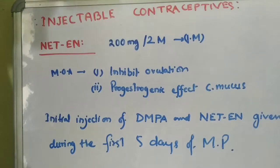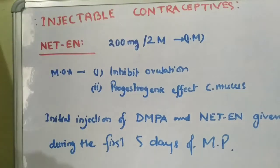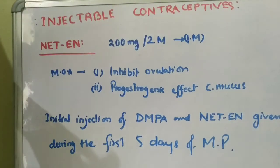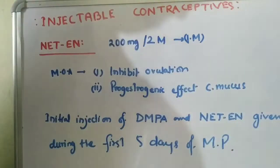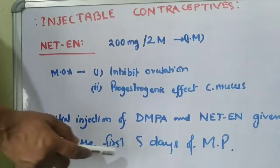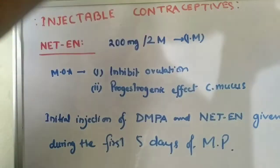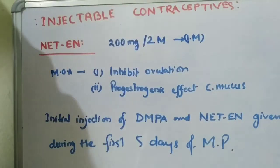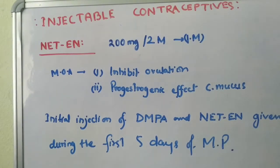Regarding the dose and timing of administration for both DMPA and NET-EN: both are given during the first 5 days of menstruation.